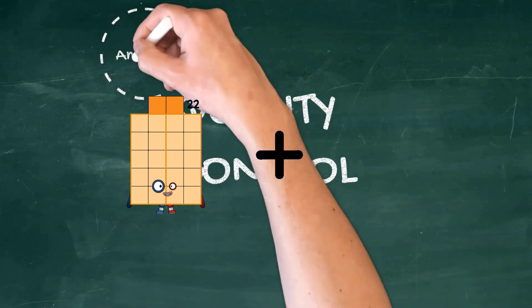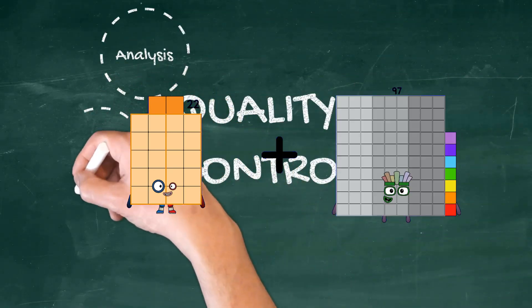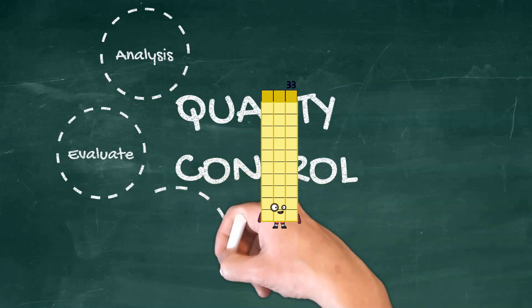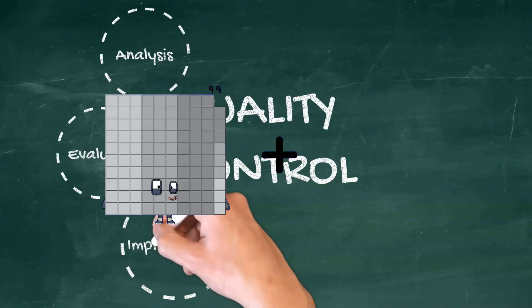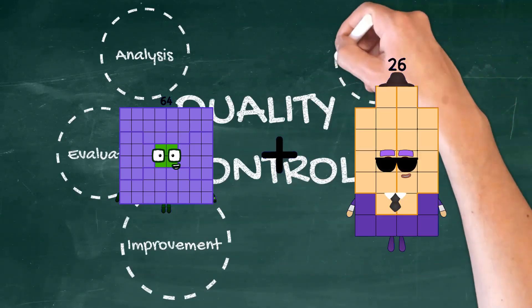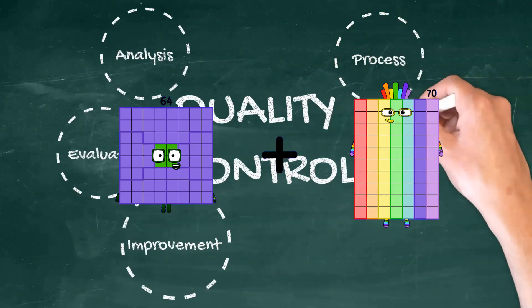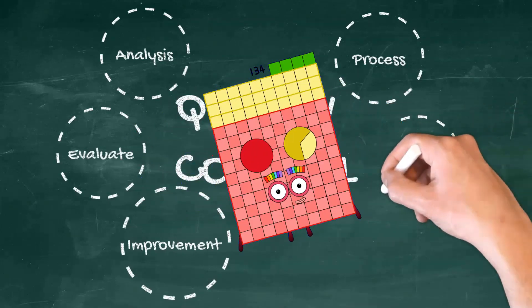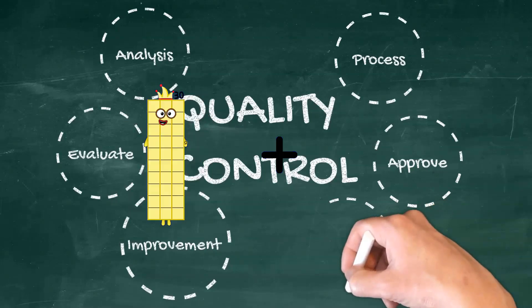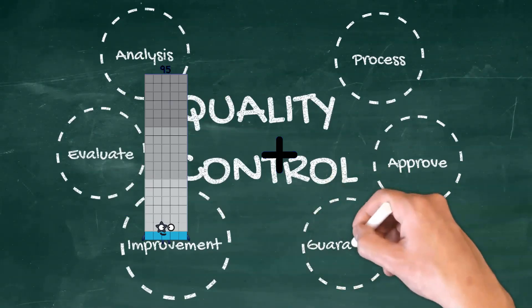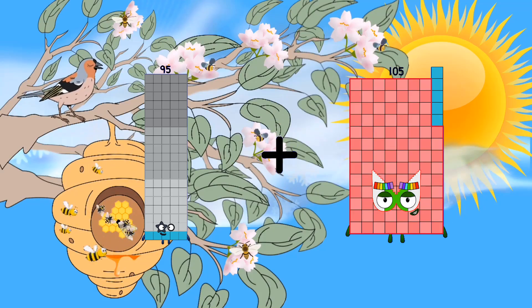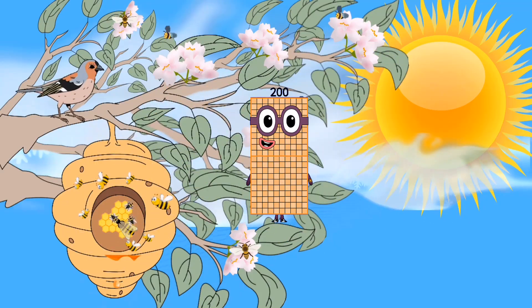22 plus 11 equals 33. 95 plus 105 equals 200.